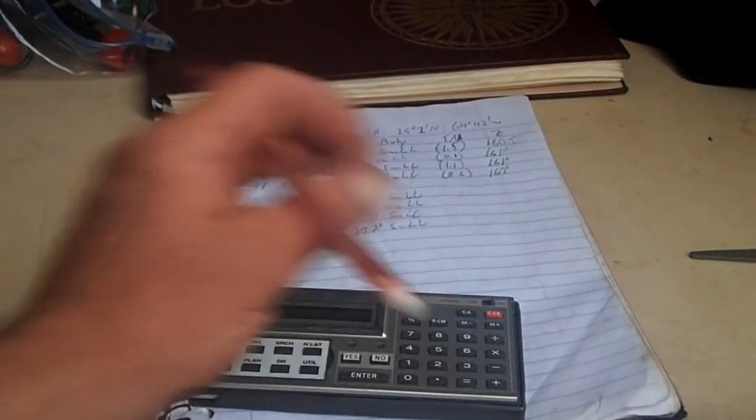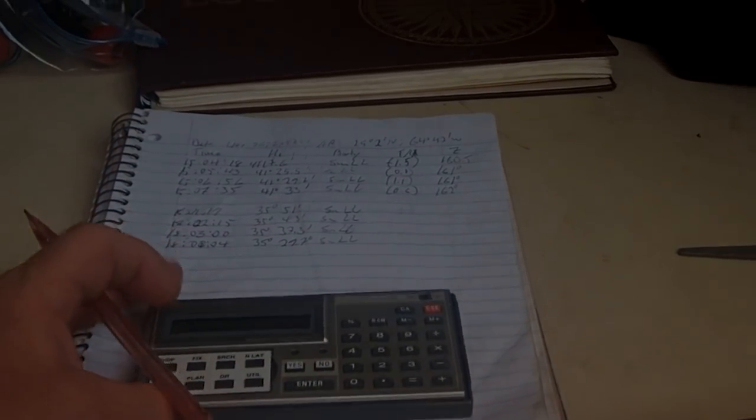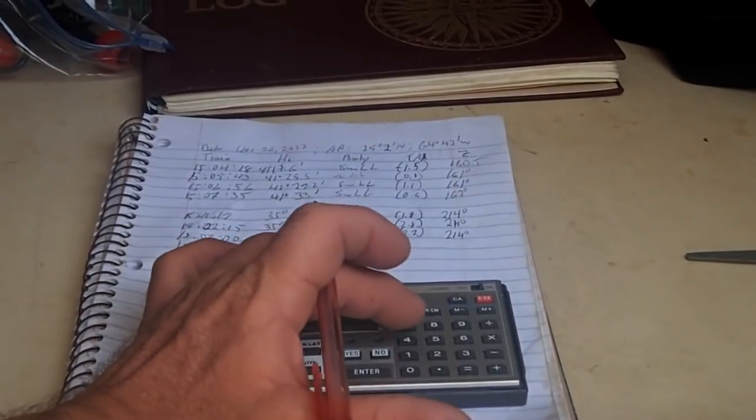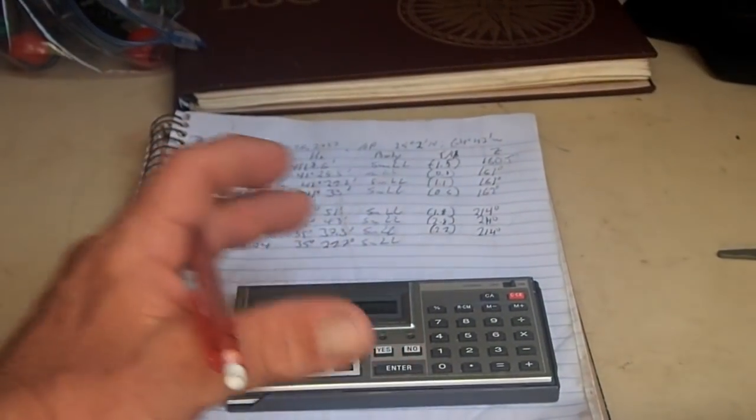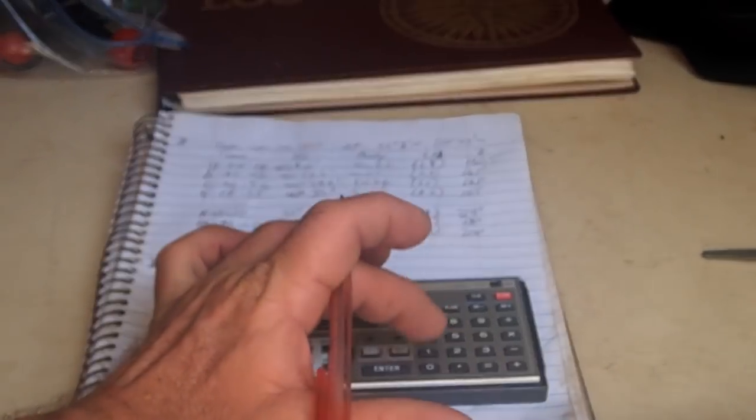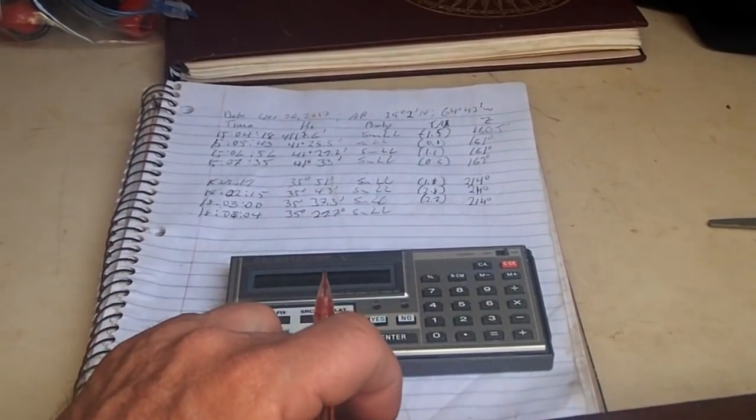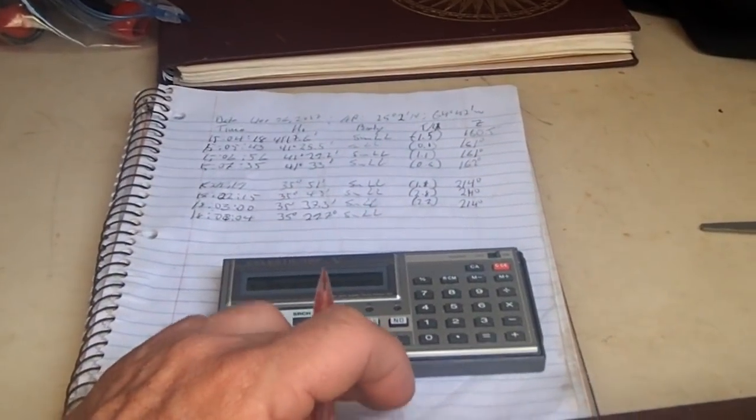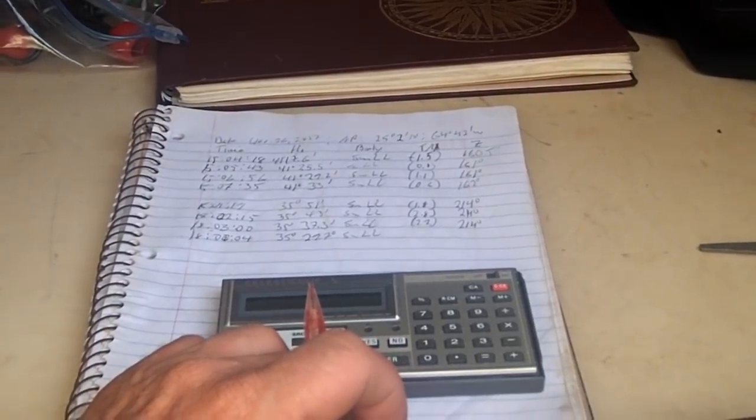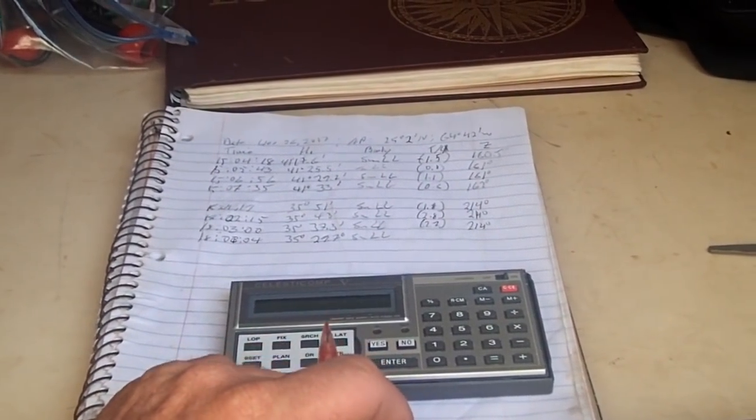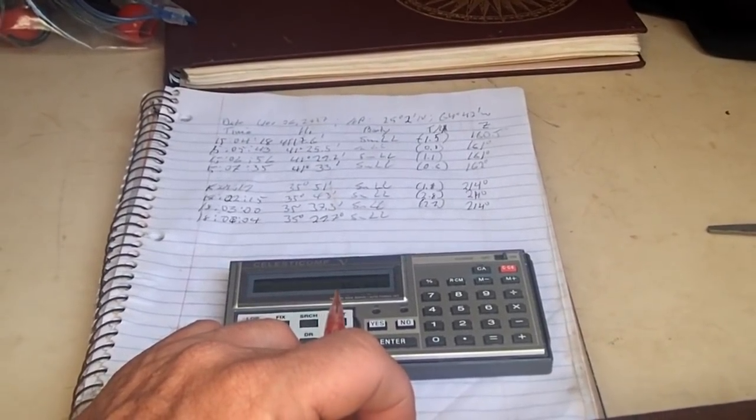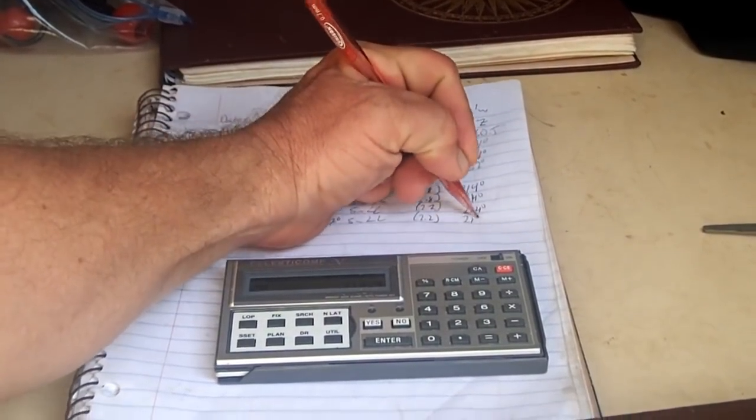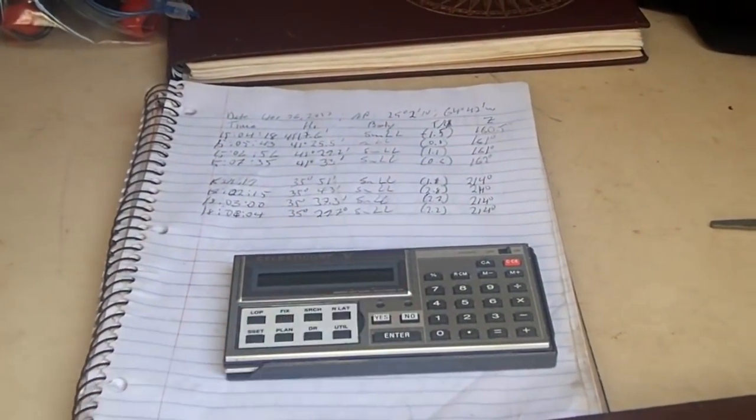So we're back with our afternoon round of sights. And, just do the last one here, 1800 hours, 4 minutes, 4 seconds, and 35 degrees, 29.7 was the observed altitude. And we're minus 2.2 miles, and the Zn is 214. And yes, we'll accept the LOP.